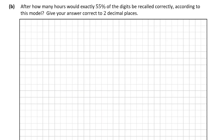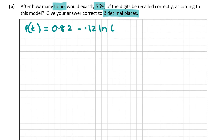Question B asks: after how many hours would exactly 55% of the digits be recalled correctly, correct to 2 decimal places? We write down the model: P(T) = 0.82 minus 0.12 ln(T + 1) and set it equal to 0.55, since 55% of the digits are recalled correctly. We need to solve for T.